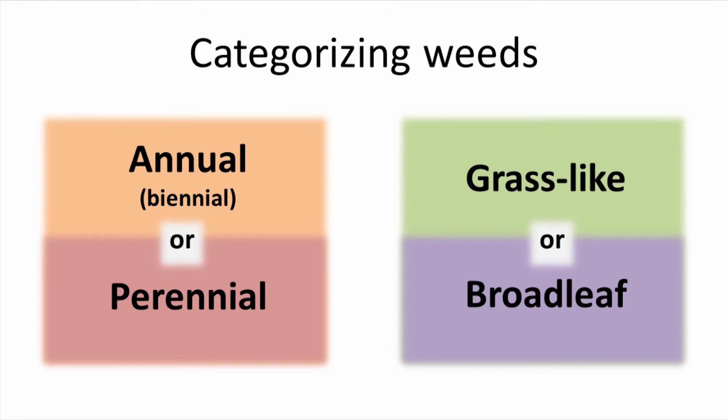One way to categorize weeds is based on life cycle, the other by plant anatomy. We'll start by looking at annual and perennial weeds.